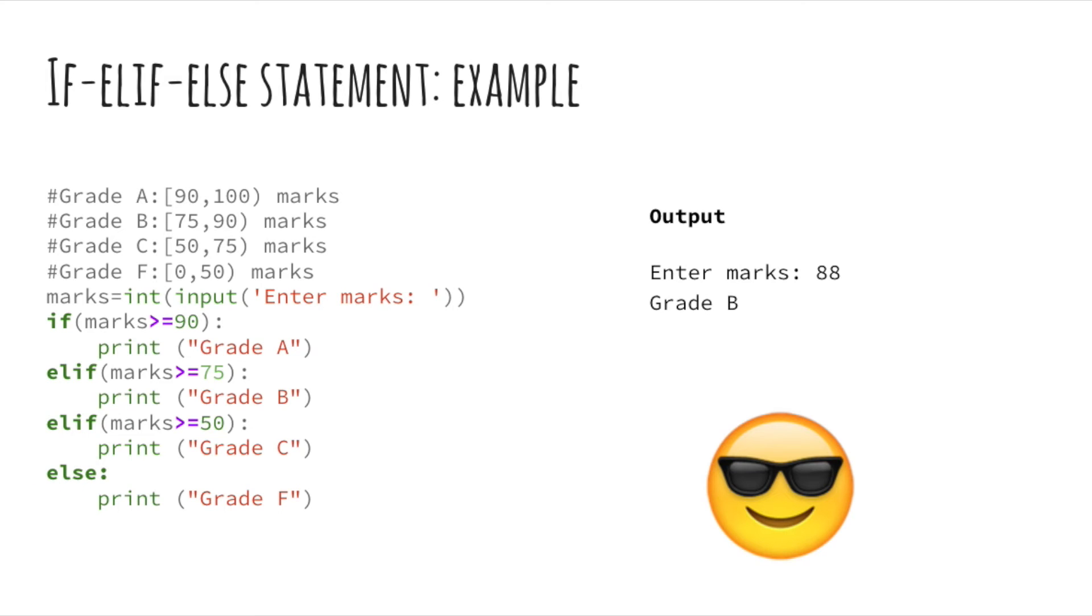Let's look at this example. Here you can see if entered input marks are greater than or equal to 90 then grade A is printed. Otherwise else if marks are greater than or equal to 75 then grade B is printed. Else if marks are greater than or equal to 50 then grade C is printed. And if all the statements are false so if marks are less than 50 then grade F is printed.